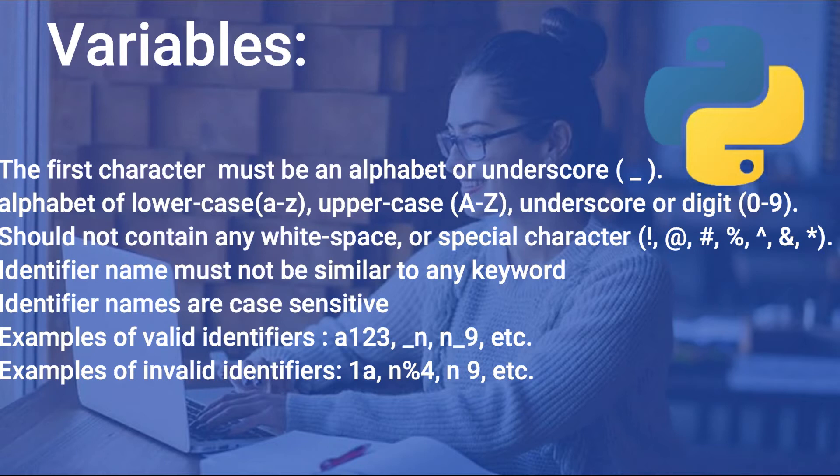Variable names are case sensitive — uppercase and lowercase variables are different. Valid examples include A123, underscore-prefixed names. Invalid examples include names starting with special characters; we must start with an alphabet or underscore.